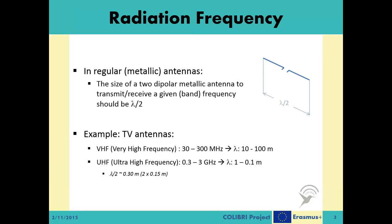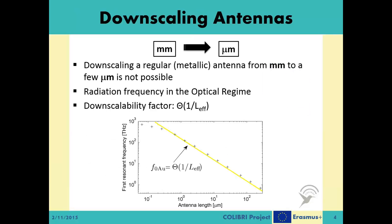Regarding the radiation frequency, in classical metallic antennas, the size of a half-dipole metallic antenna to transmit or receive in a given frequency band should be λ/2. Our main motivation to downscale the antennas is the fact that in applications like wireless network-on-chip, we do not have a lot of physical space available to put bigger antennas.